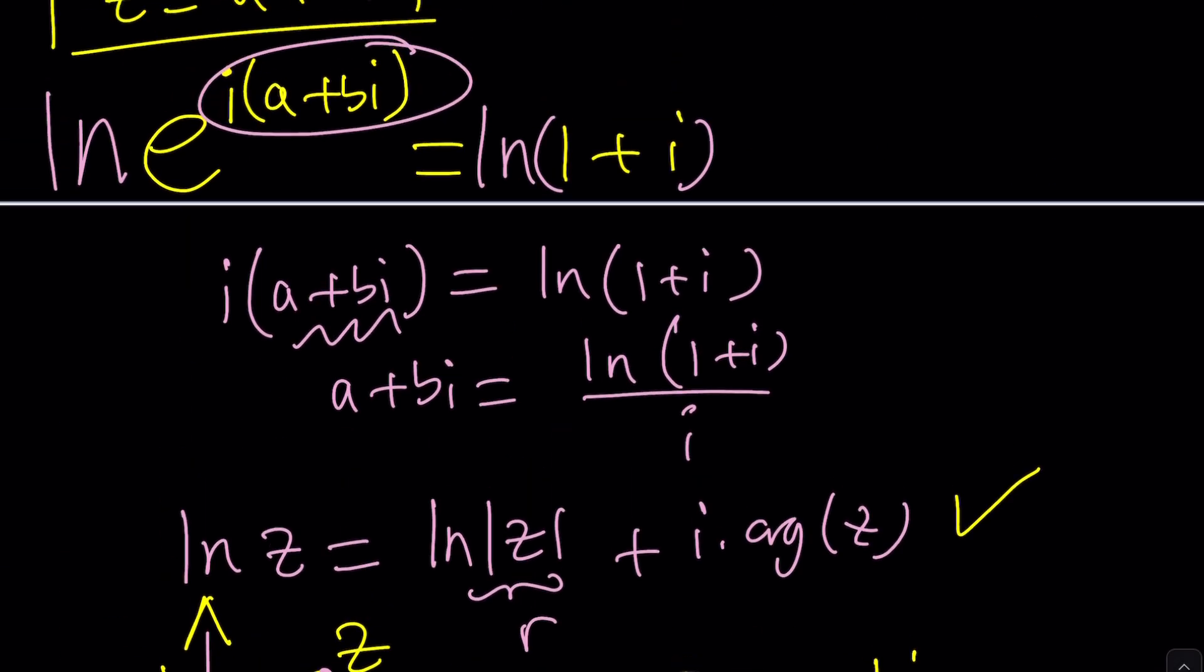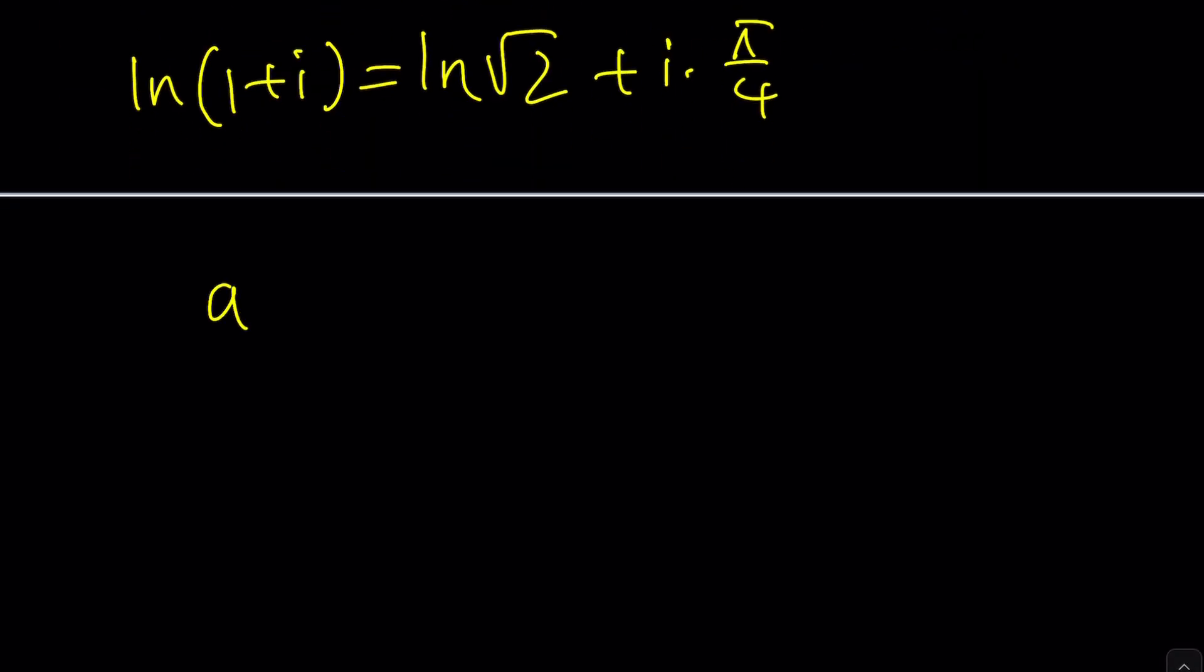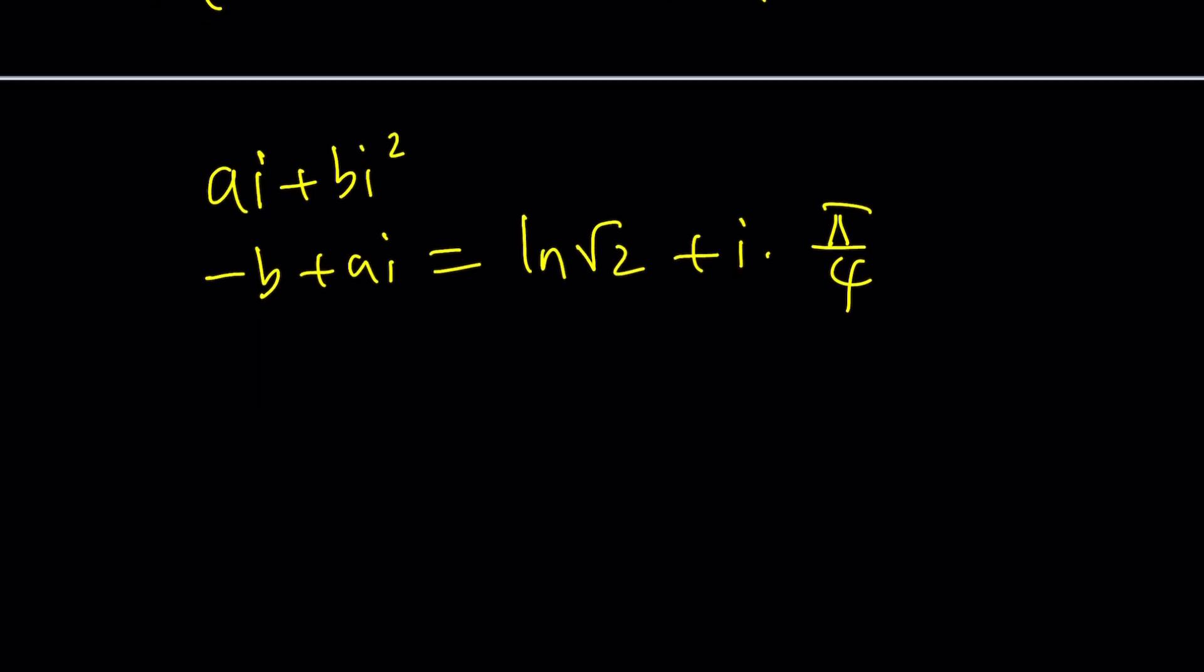But what if you did it a little differently like this? This is ln 1 plus i and I have it on the right hand side. Why don't I just distribute this? It's going to give me ai plus bi squared, but that's just negative b plus ai equals ln root 2 plus i times pi over 4. That's the equation we're getting, right? Exactly.